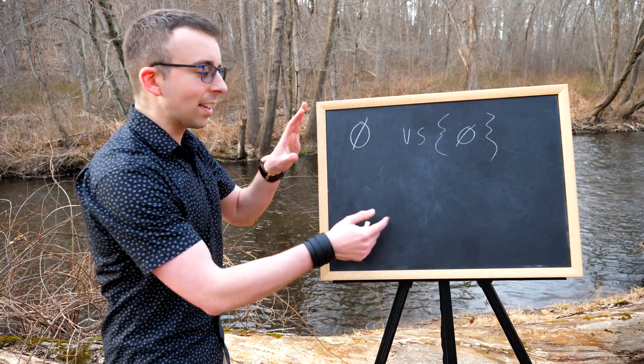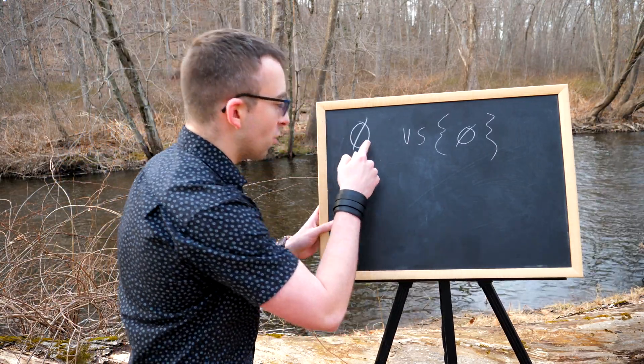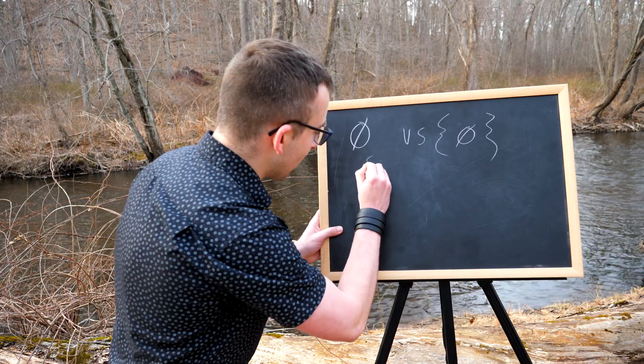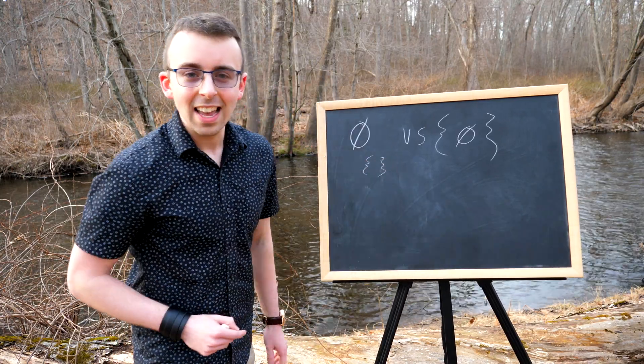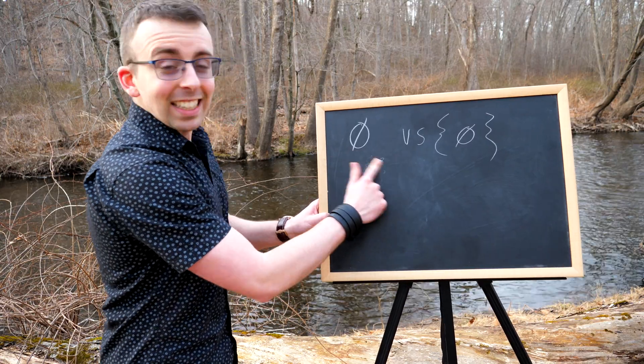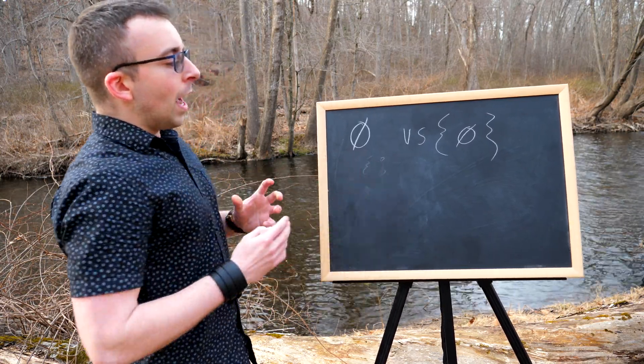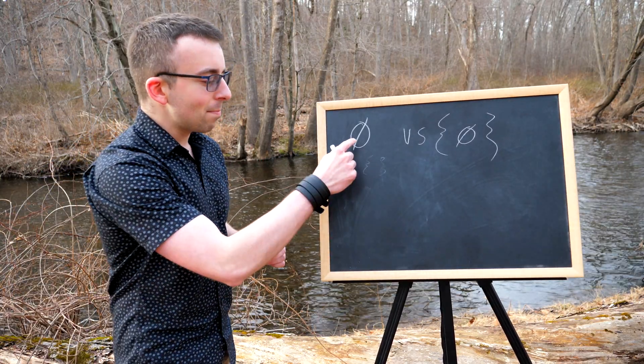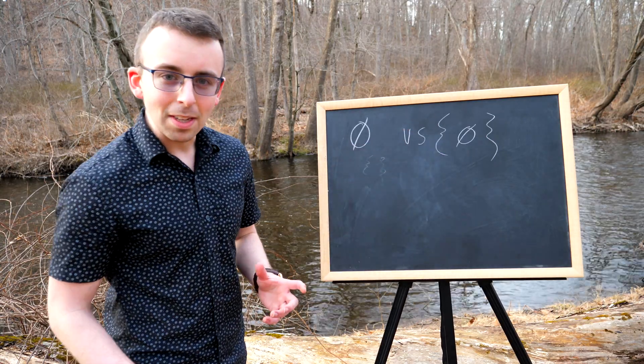Now, note here I'm going to mix in the empty set notation where we have the zero and a line through it, as well as the empty brackets. If you just use the empty brackets over and over again, it gets a little bit monotonous. So, as far as the difference between the empty set and the set containing the empty set,